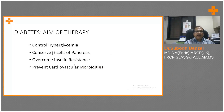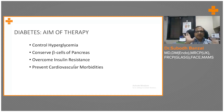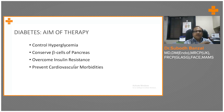The aim of therapy should be not only control of hyperglycemia — we have to conserve beta cells of the pancreas, we have to overcome insulin resistance, and we have to prevent cardiovascular morbidity. So these are the things: control of hyperglycemia, conservation of beta cells of the pancreas, overcoming insulin resistance, and prevention of cardiovascular morbidity.